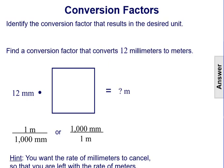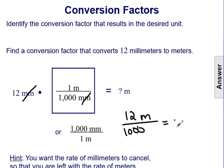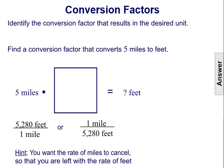Another example: converting 12 millimeters to meters. We want the millimeters to cancel, so we need a conversion factor with millimeters in the denominator, like one meter over 1,000 millimeters. This cancels the millimeters and leaves us with 12 meters over 1,000. Dividing 12 by 1,000 gives us 0.012 meters.